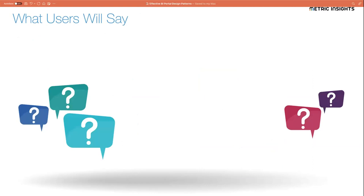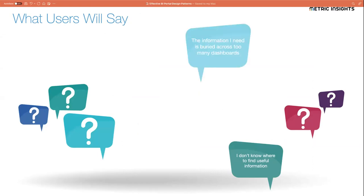If you were to ask your users what's going on, you would hear things like: I just don't know where to find the information that's useful to me. If there's so much clutter in the environment, so much content that's not useful, it's hard for people to find the content that actually can be useful — that they can take action with.